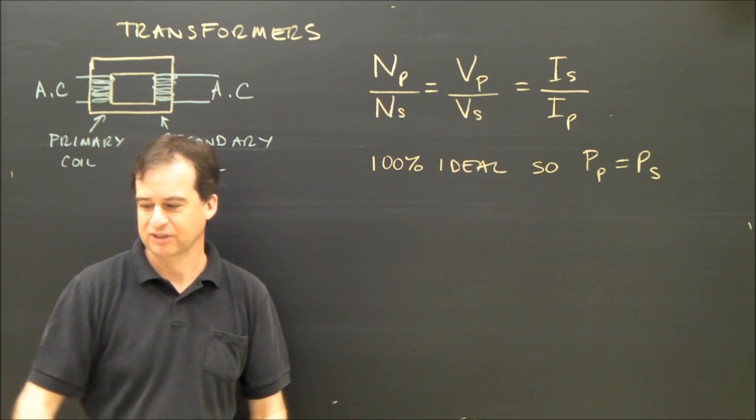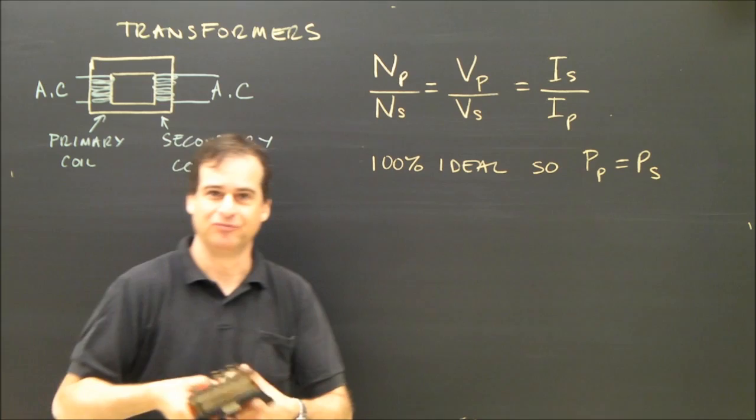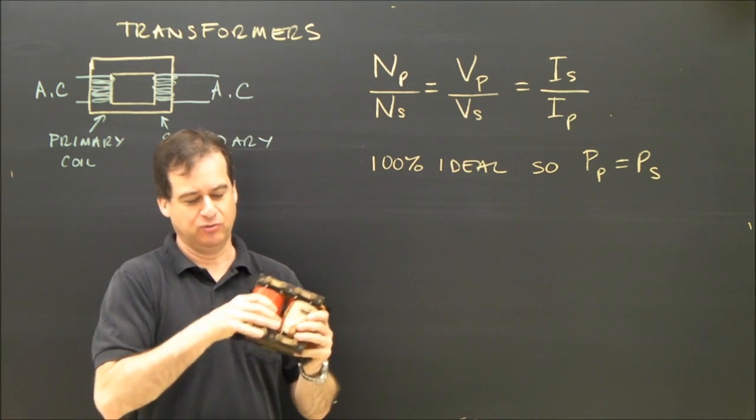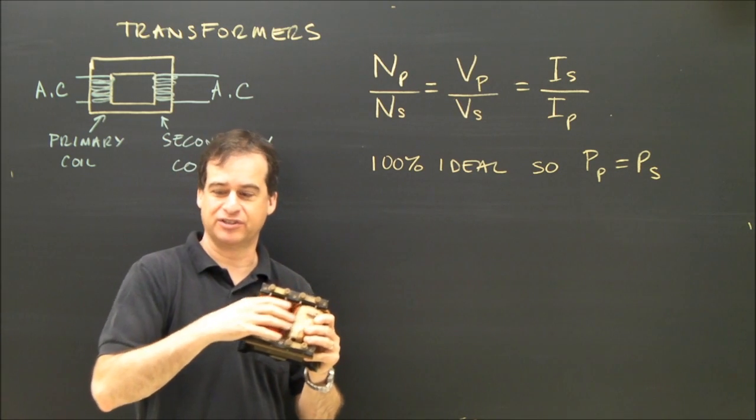Let's take a look at transformers. This is a transformer here. A transformer is a ring of metal with two coils. One coil on this side, one coil on this side.